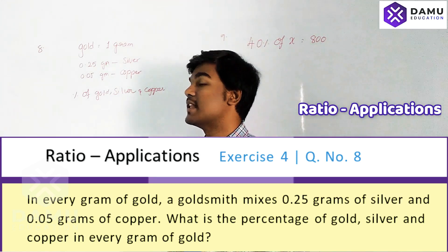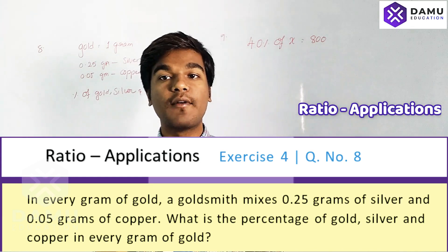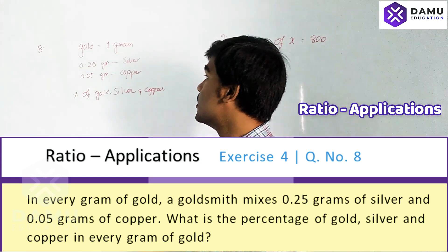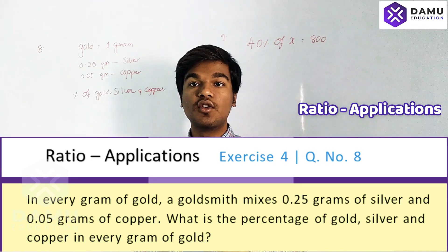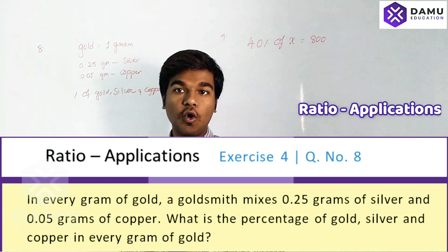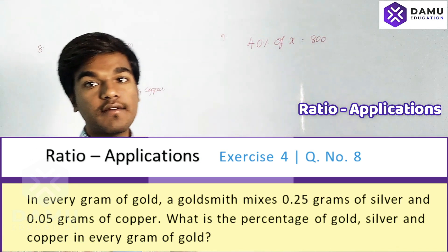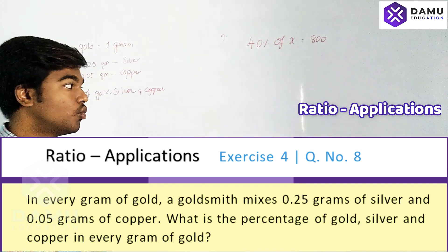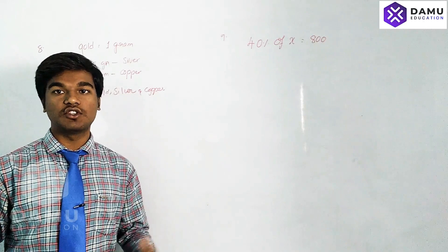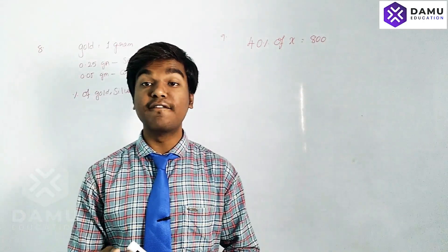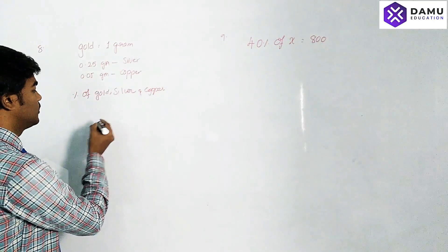Our next question is the eighth one. A goldsmith mixes, in every one gram of gold, 0.25 grams of silver and 0.05 grams of copper — the remaining will be gold. We have to find what percentage of gold, percentage of silver, and percentage of copper is there in every one gram of gold.